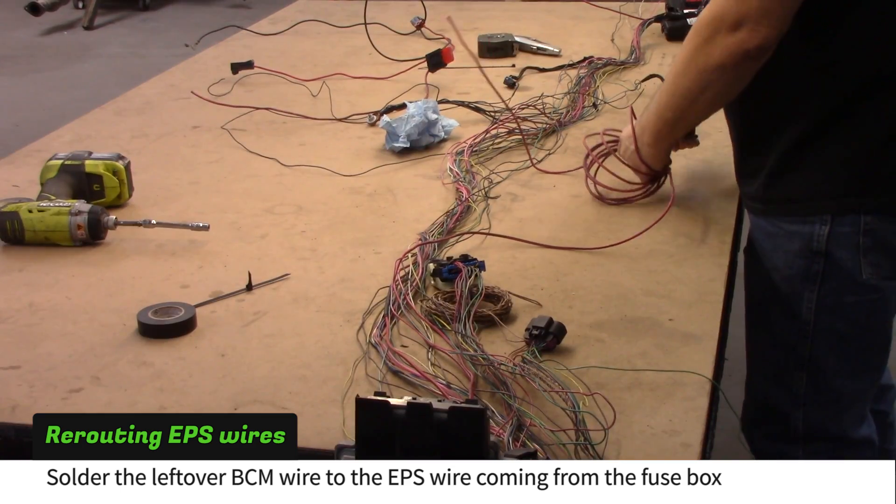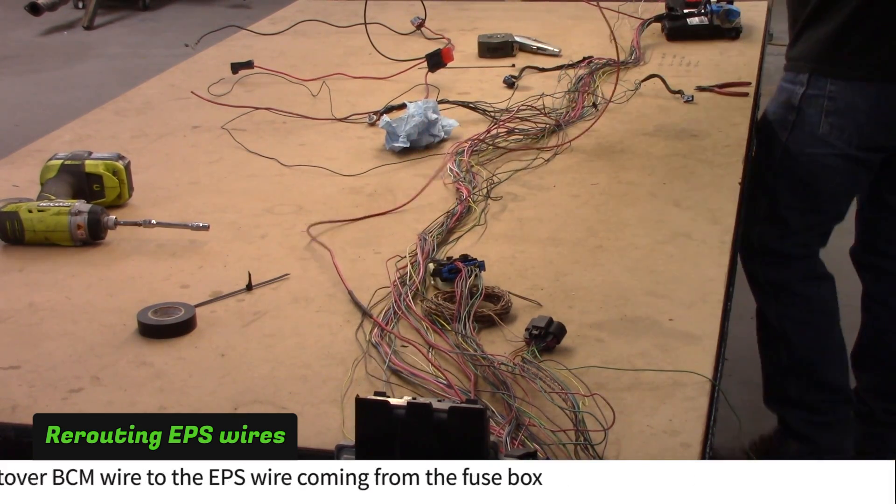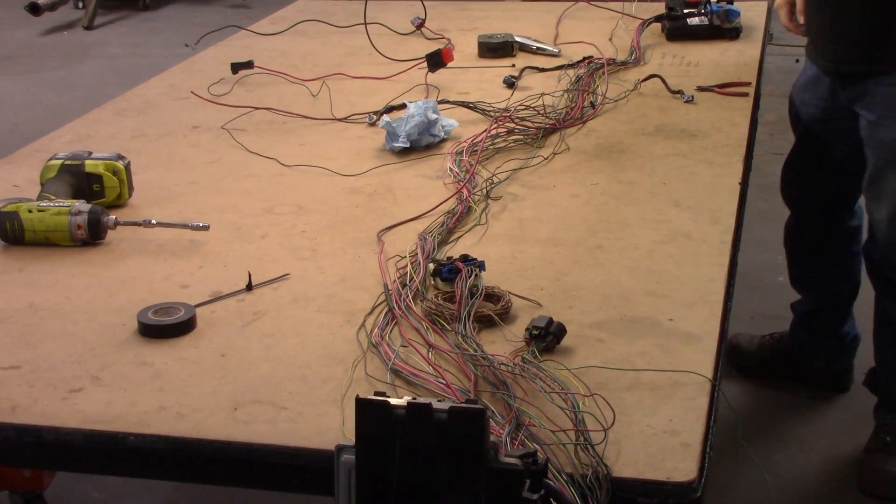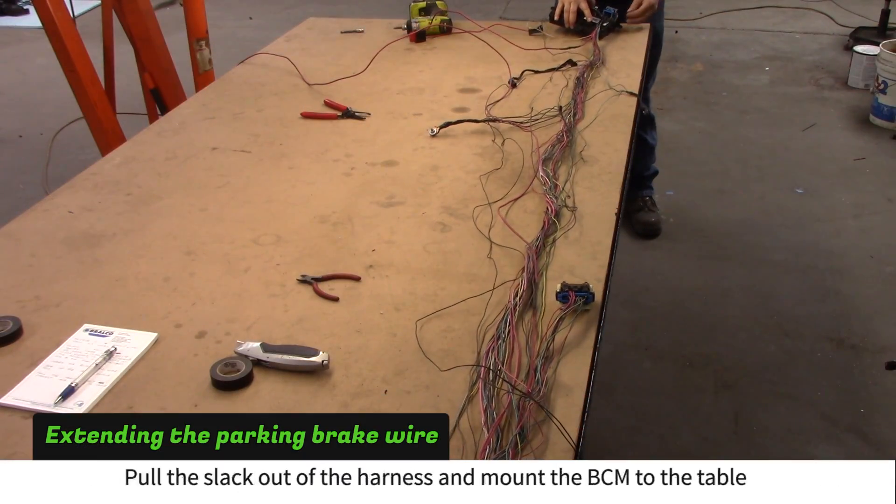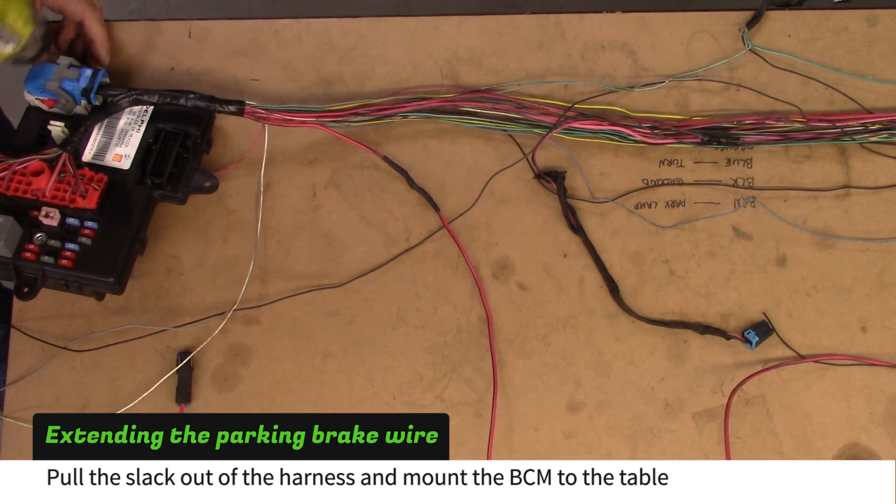Pull the large red power wire toward the BCM. Grab the BCM and pull the slack out of the main harness. While holding tension on the harness, attach the BCM to the table.